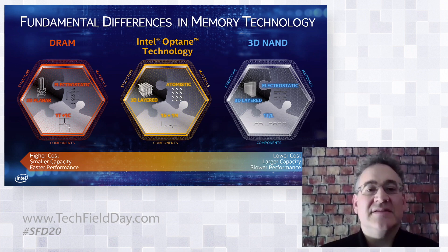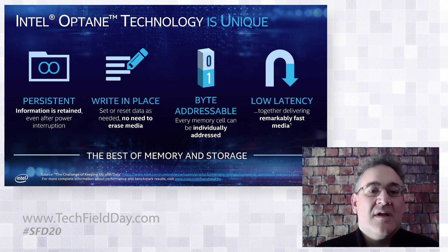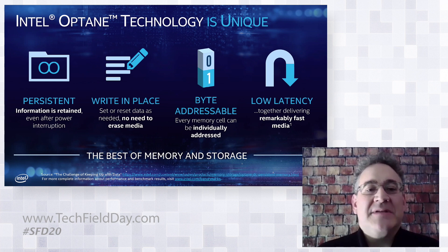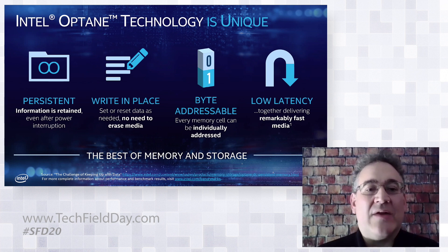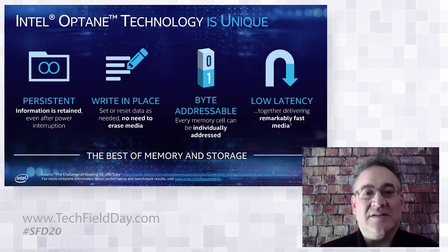Let's talk about how Intel Optane technology is specifically unique. Compared to DRAM, it's persistent — information is retained even after a power interruption. Two of the biggest differences versus NAND: Optane is in-place and byte-addressable. With NAND, you have to write in 4K blocks even for smaller data, consuming more SSD space. You also have to erase a group of blocks during garbage collection. This creates two major issues in NAND SSDs — write amplification and garbage collection — that Optane media does not have to deal with, providing consistent quality of service.